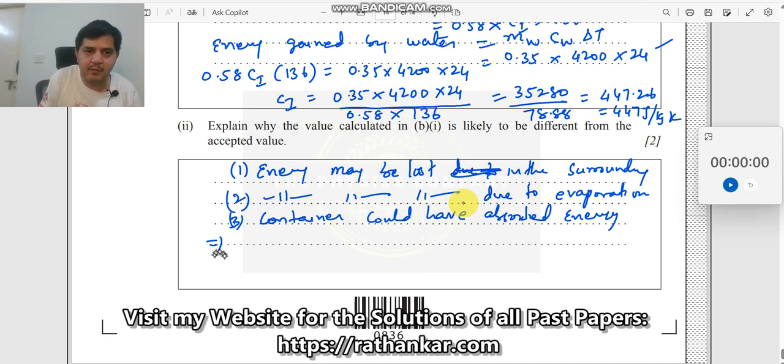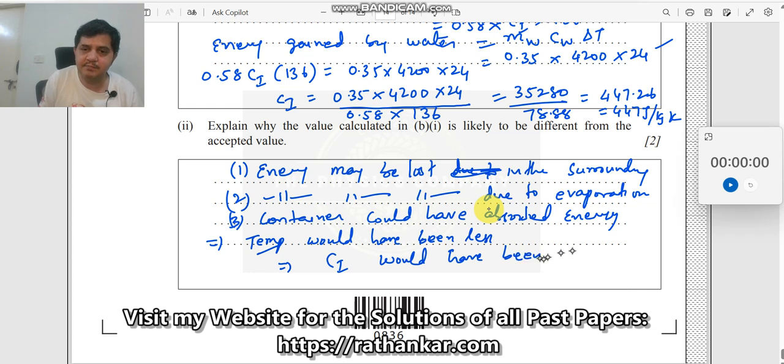So as a consequence of it, what could have happened? The temperature that we assumed may not be correct. The final temperature would have been less or low. And as a result of it, you could have seen that Ci would have been higher. But you are getting a lower value of C. All these points should be very clearly mentioned. So with this we come to an end to this series. Thank you. Bye-bye.